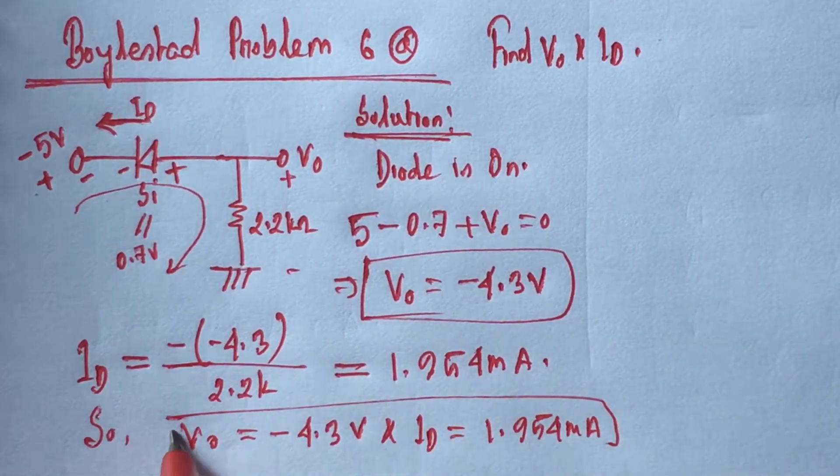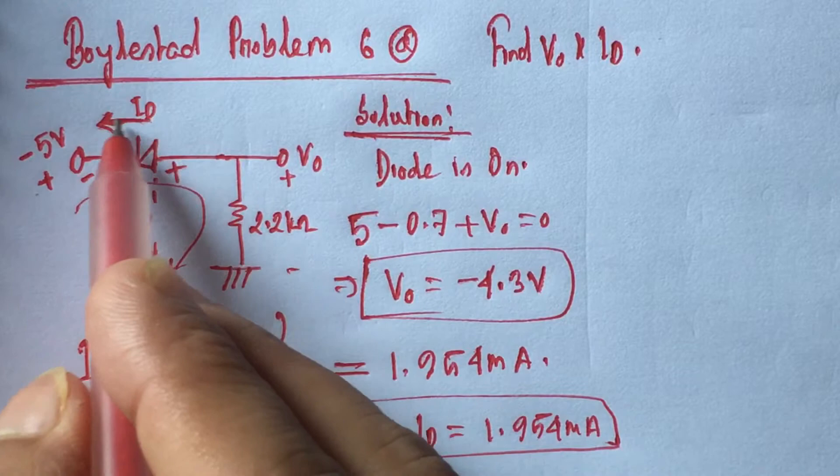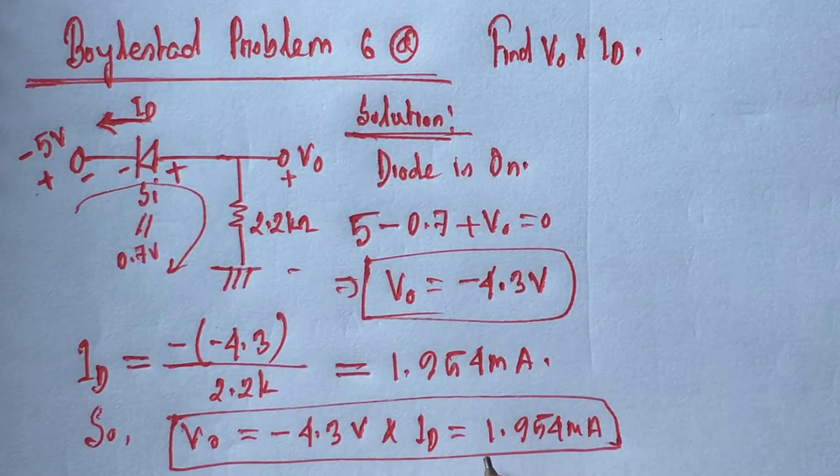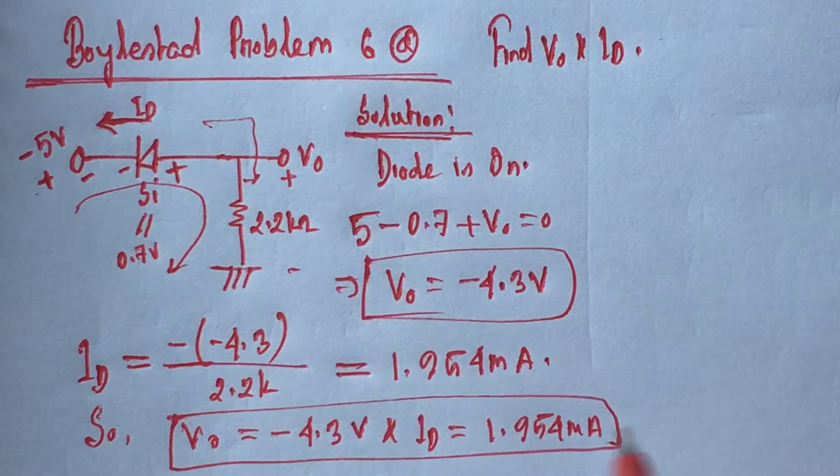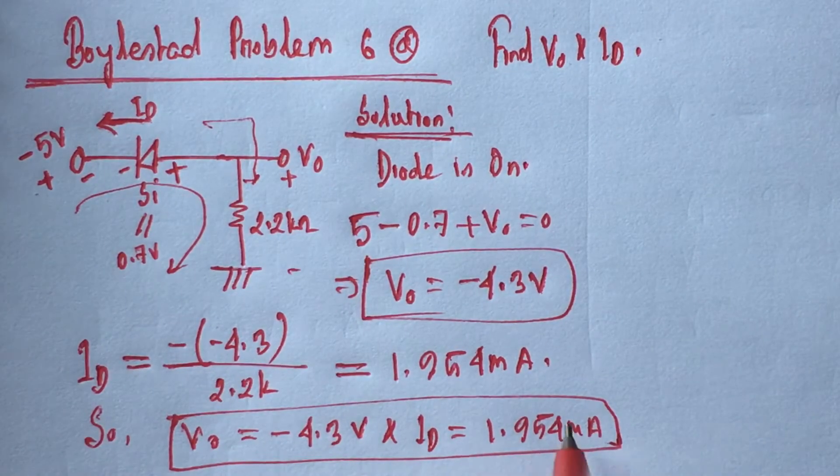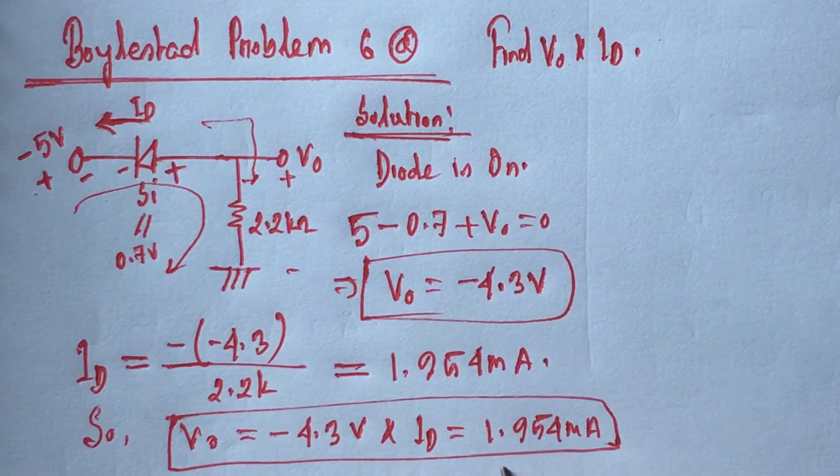Here since current is flowing this way, this is positive. If current would flow through this way then this value of current would be negative. And this is the answer. Thank you.